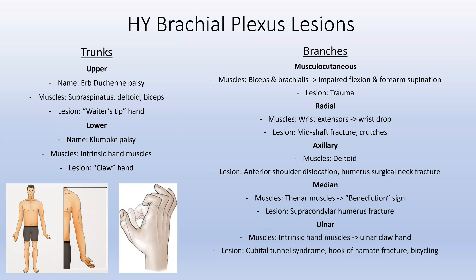Here is a summary slide of the high-yield lesions, with trunks on the left and branches on the right. Keep in mind there are also divisions and cords, but these are typically the highest yield tested because they are well characterized. The upper trunk — Erb-Duchenne palsy — affects the supraspinatus, deltoid, and biceps, producing the waiter's tip hand: the arm is internally rotated, pinned in adduction against the body, and the hand is stuck in flexion. The lower trunk lesion — Klumpke's palsy — affects the intrinsic hand muscles. The lumbricals being affected causes MCP extension, and as those intrinsic muscles atrophy, you get flexion and clawing of the digits. Early lesions may particularly spare some fingers initially before progressing.